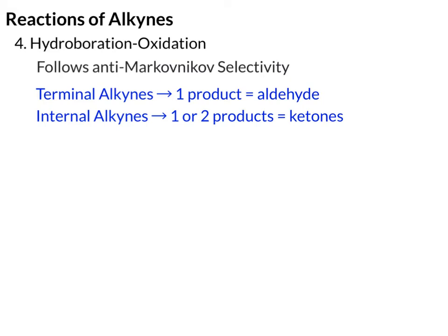We're now going to look at the counterpart of the hydration of alkynes: the hydroboration-oxidation. Like alkenes, this is going to follow anti-Markovnikov selectivity as long as you have a terminal alkyne. That's going to give us one product, which will be an aldehyde. Internal alkynes, because there's no selectivity, will give one or two products, which will be ketones.